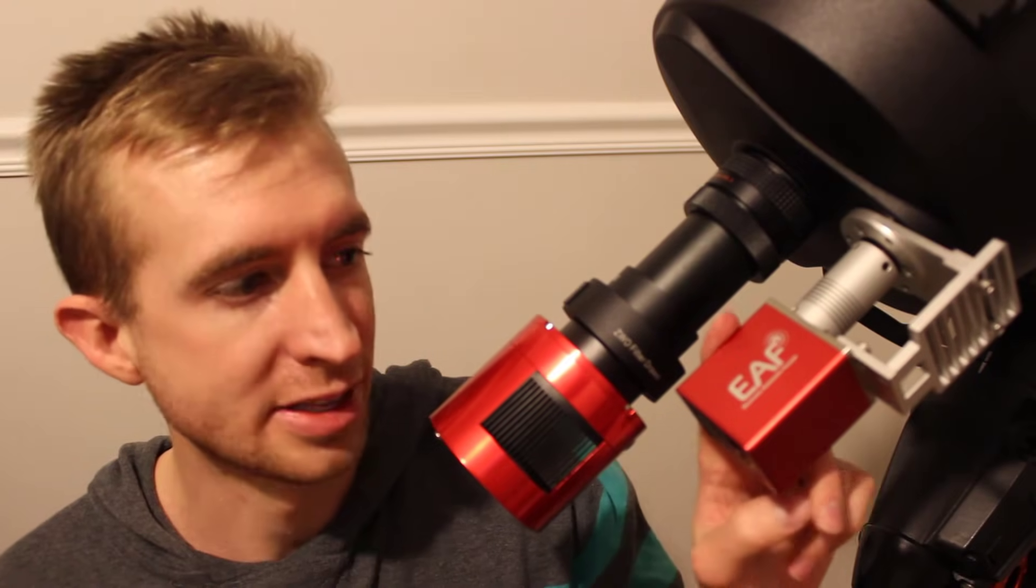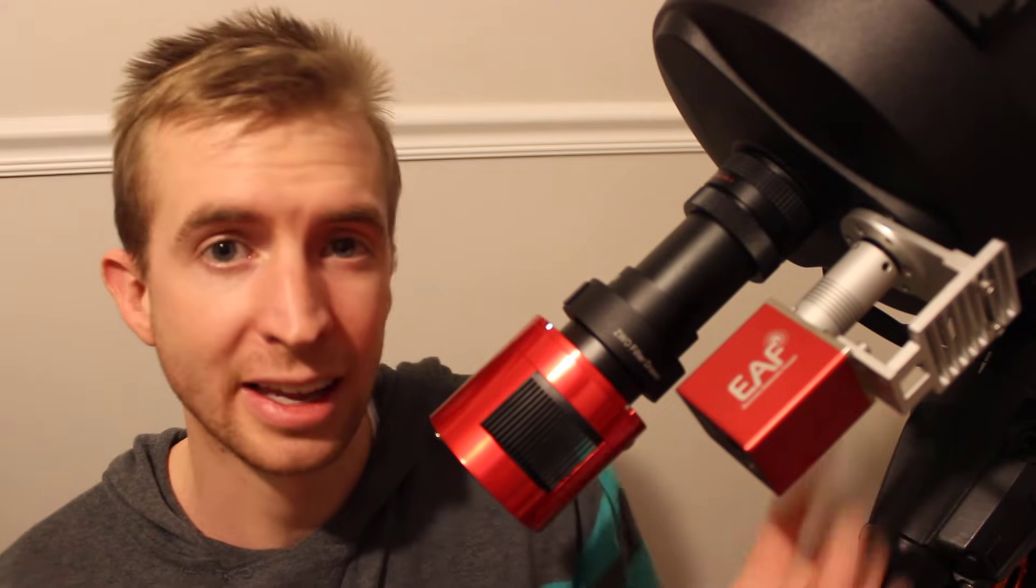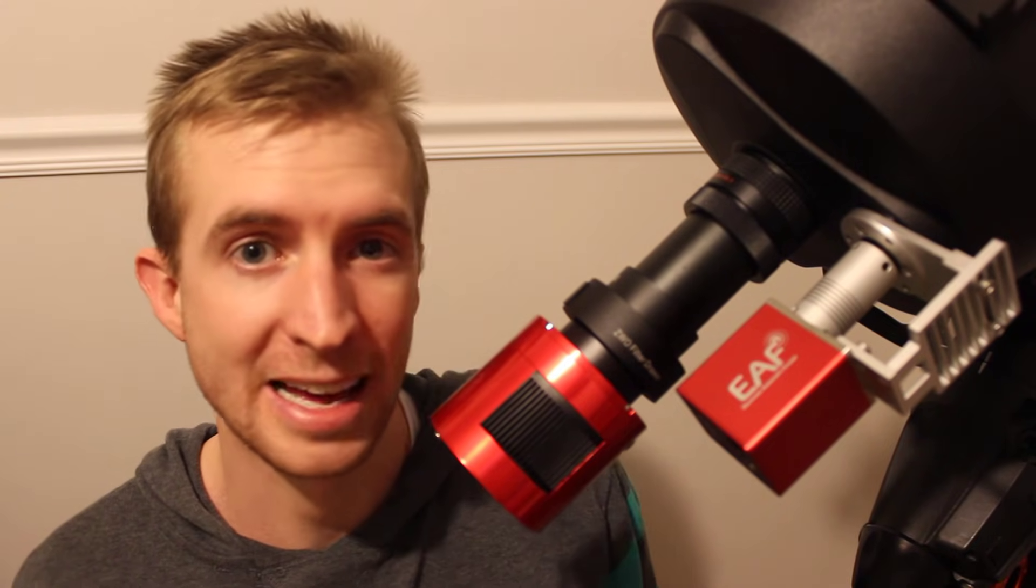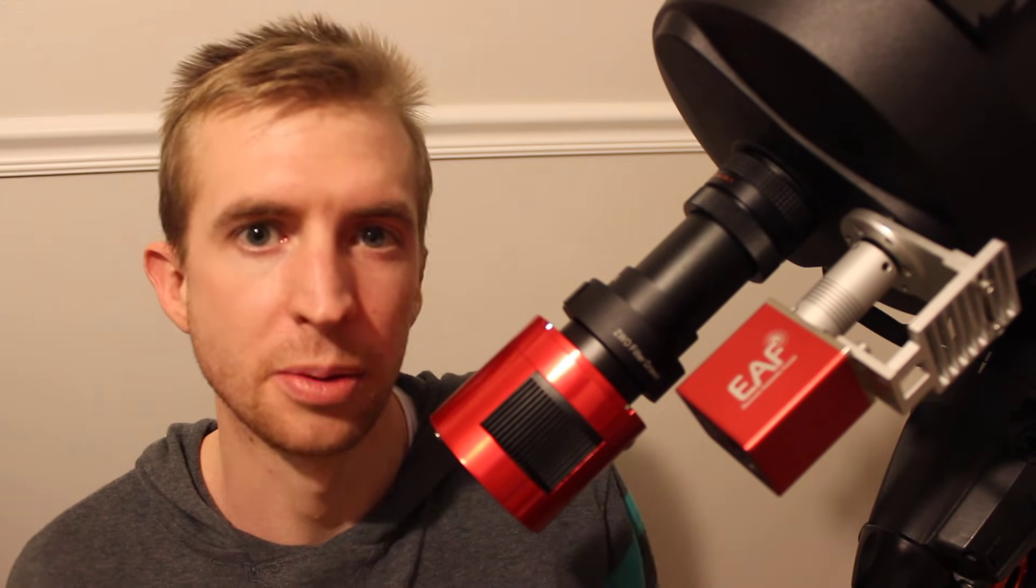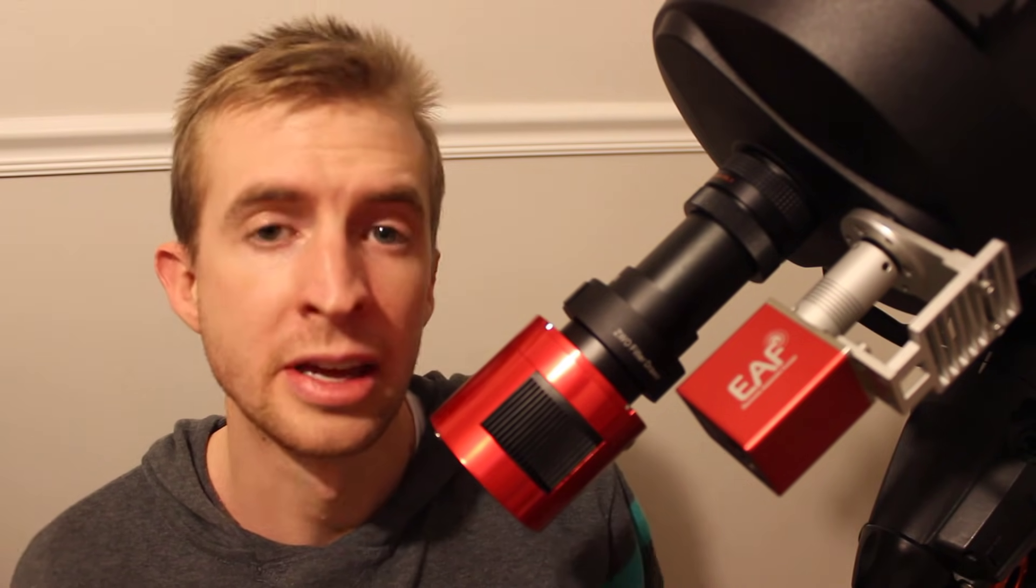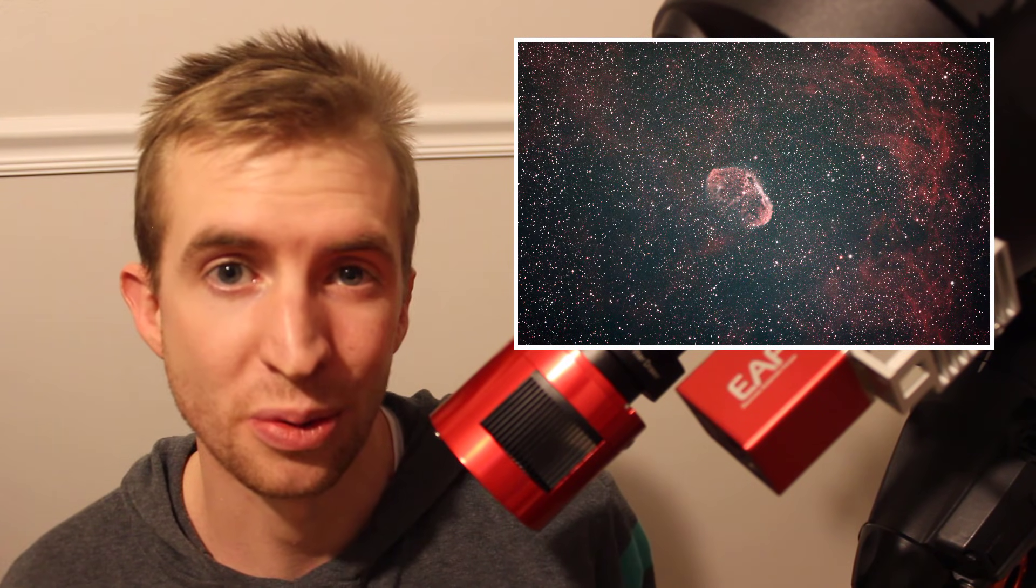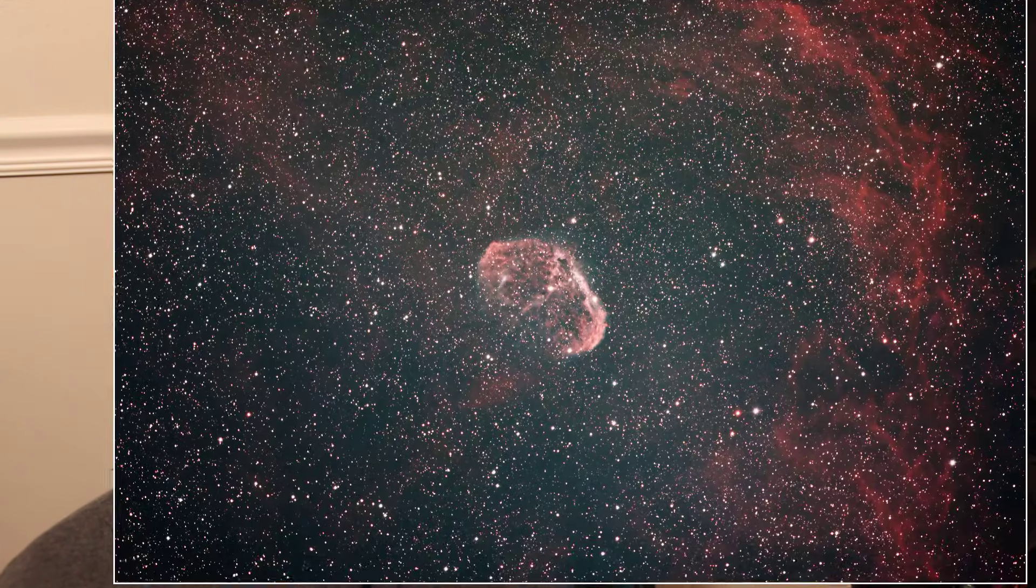Alright everyone, well that is how you install the ZWO EAF and the new bracket on Celestron's standard Schmidt Cassegrain and RASA focusers. I know there's a couple tricky parts to this video but hopefully overall it was pretty easy to follow along with. As always, thanks so much for watching. I hope you have a great day and clear skies.